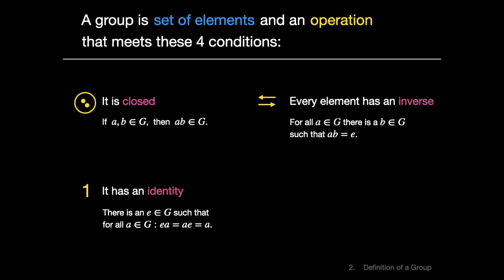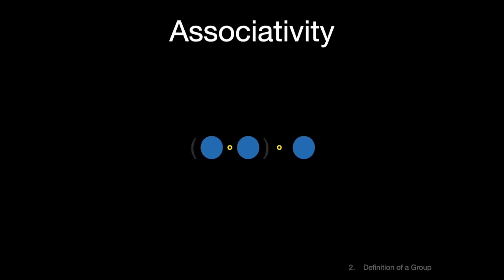And then we come to our fourth and final property, associativity. This says it doesn't matter how we group our elements, so long as we don't mess with their order. Consider adding integers. If you add three numbers together, you can put the parentheses here or here. You get the same result either way.